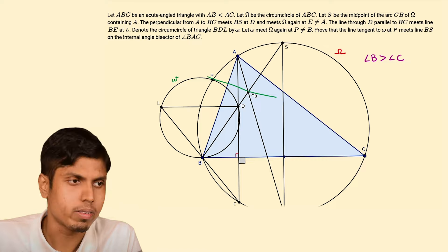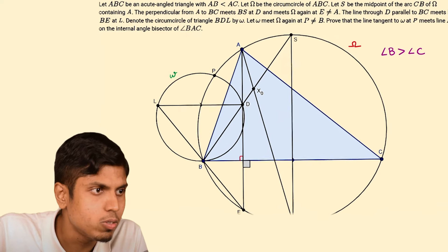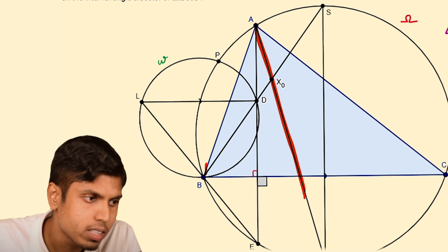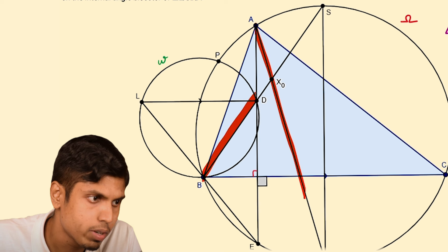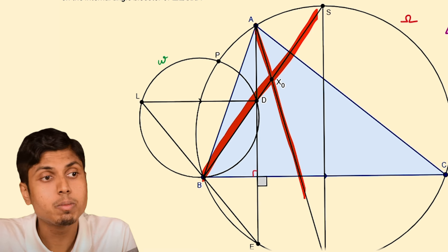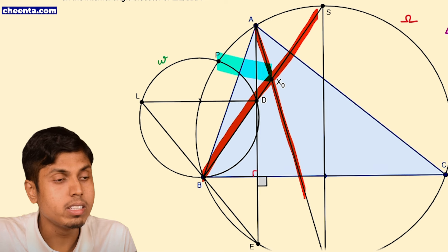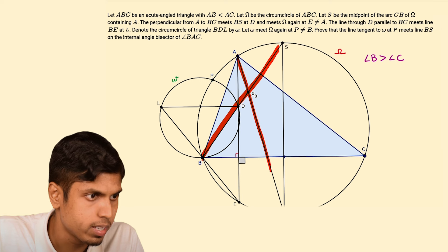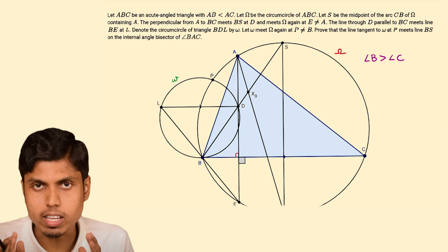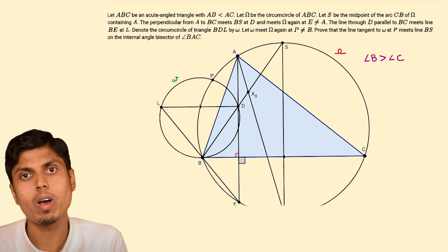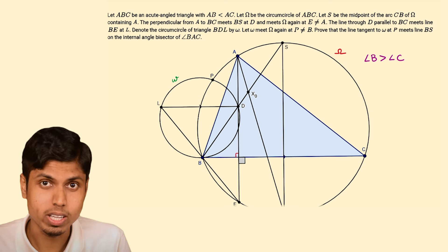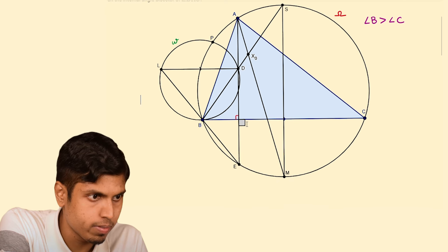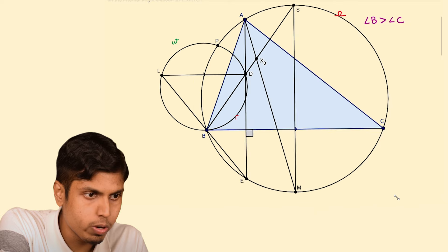This can be rephrased as: the tangent at P to omega, the line segment BS, and the internal angle bisector all concur at a point. Let's prove this differently. Let X0 be the intersection of the angle bisector with the line segment BS. Then we prove that PX0 is the tangent at P to omega. Since it's an acute-angled triangle, there are no configuration issues, so angle chasing can be done without worry.